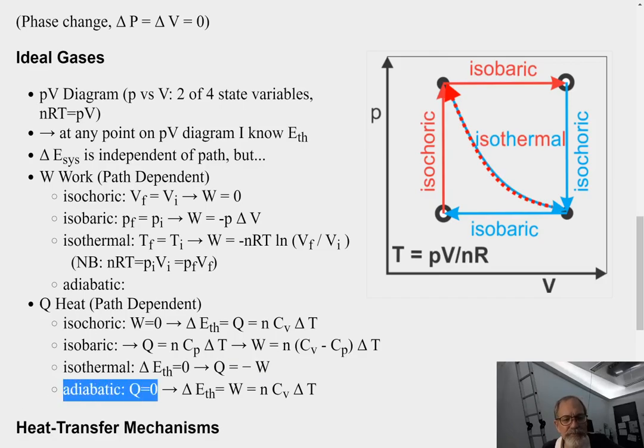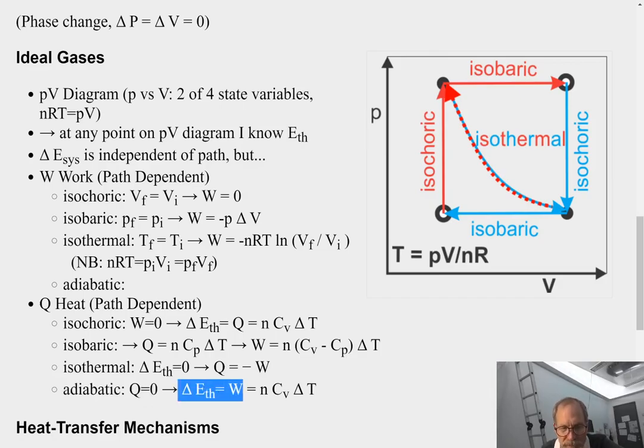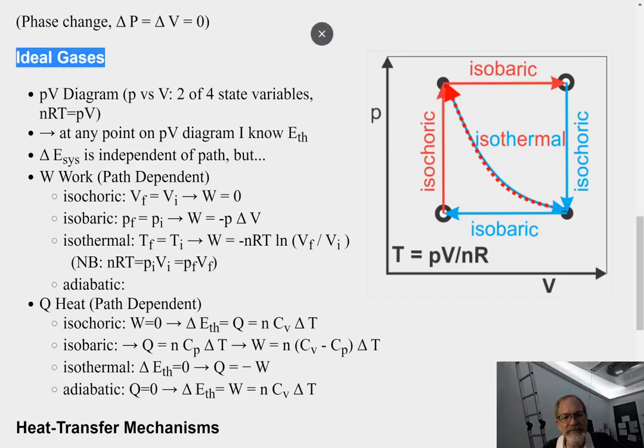And finally, adiabatic, where I said Q equals zero, therefore, the total change in thermal energy is only due to the work being done. And that's going to be N C_V delta T again, because, again, delta T_H is independent of the path. So, these, for ideal gas, but remember, this only applies for ideal gases.